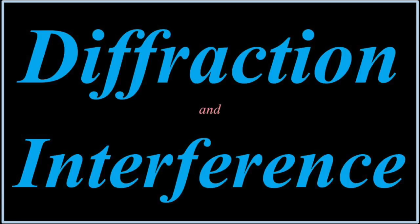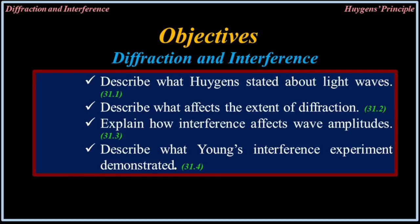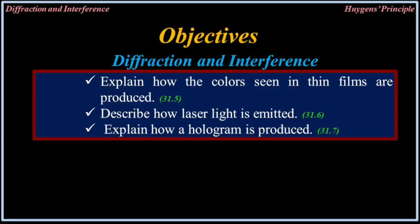Diffraction and interference. This chapter covers: what Huygens stated about light, what affects the extent of diffraction, how interference affects wave amplitudes, what Young's interference equipment demonstrated, how the colors seen in thin films are produced, how laser light is emitted, and how a hologram is produced.